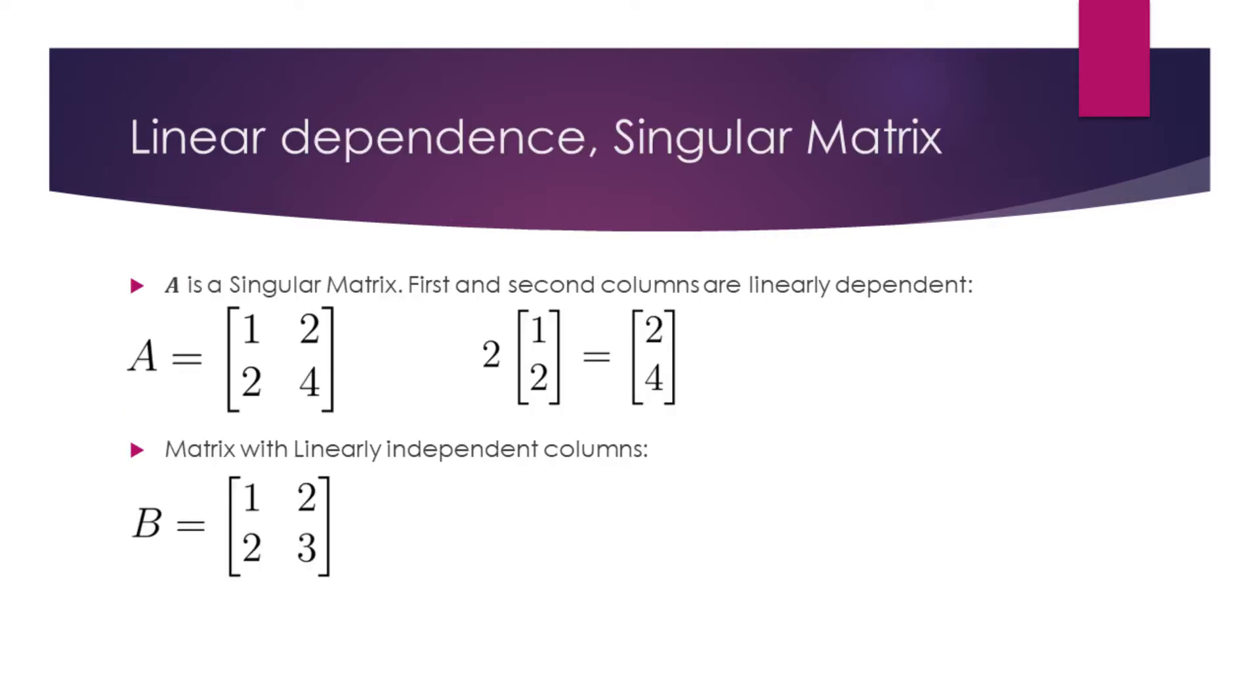A matrix that has columns which can be obtained through the linear combination of its other columns is said to have linearly dependent, or redundant columns. Matrix with linearly dependent columns is called a singular matrix.